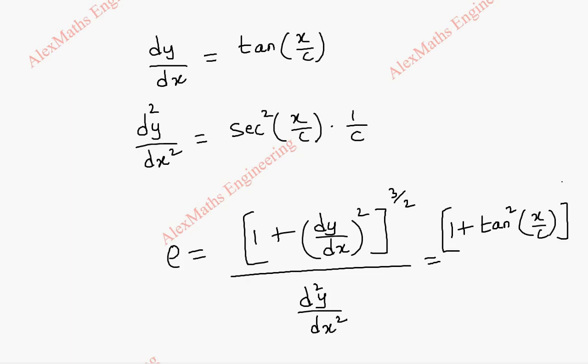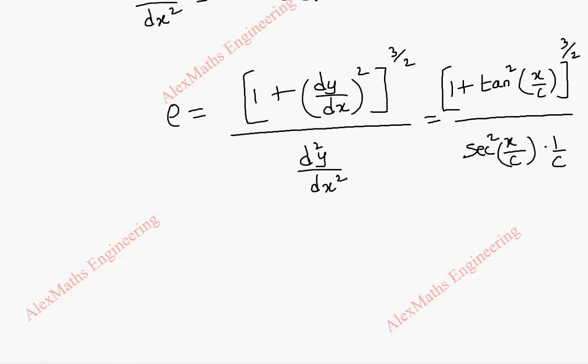then whole power 3/2, whole divided by sec²(x/c) times 1/c. In the numerator we have 1 plus tan² x form, which is sec² x.